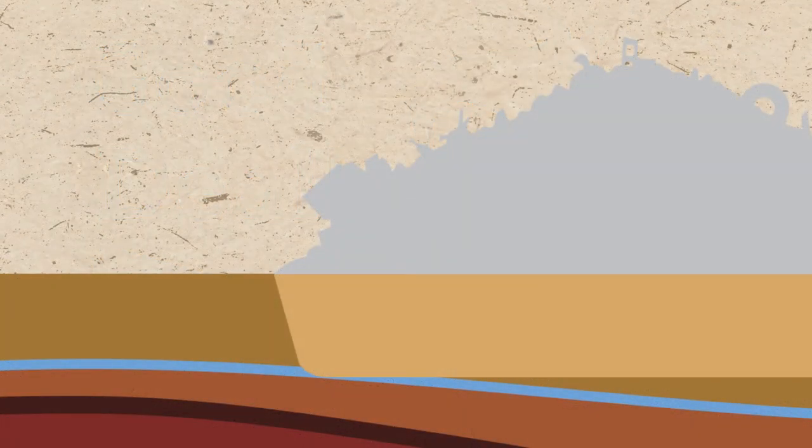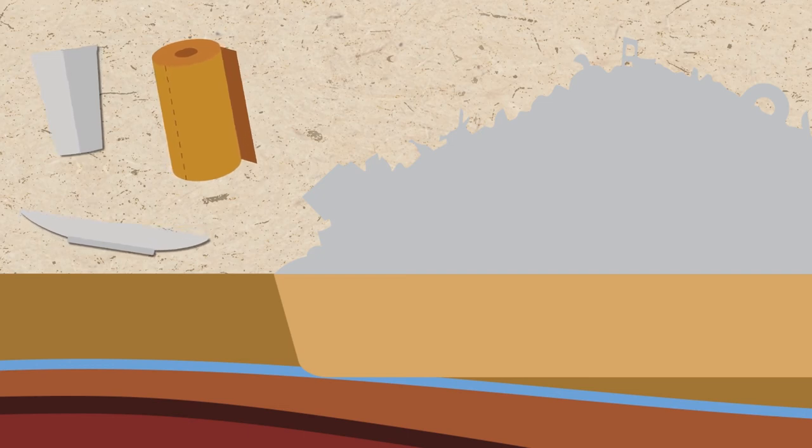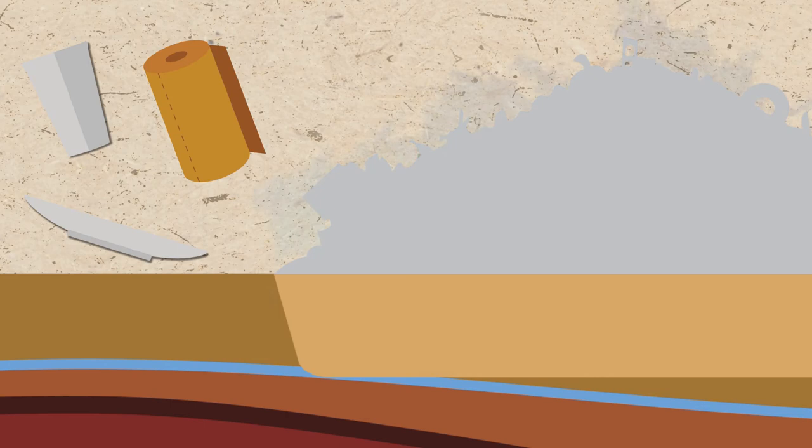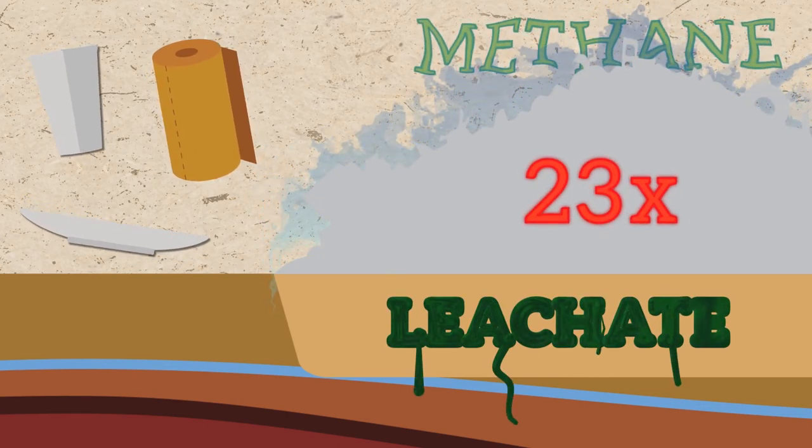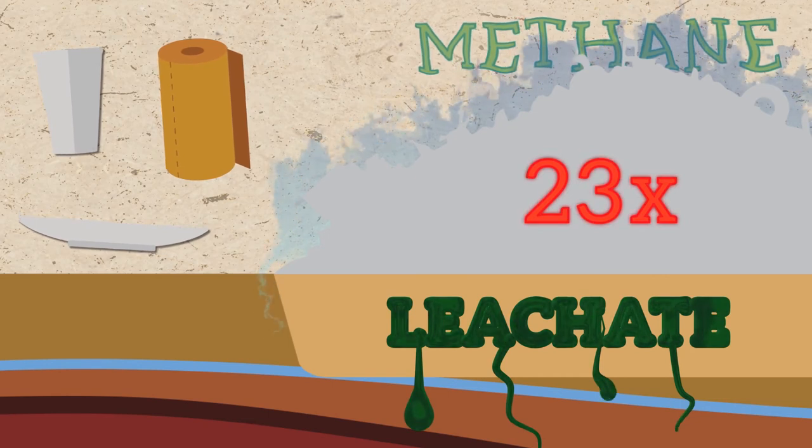What about the environmental impact? Let me explain. When paper towel and break room waste goes to landfill, it decomposes anaerobically into methane gas and leachate. Methane is considered 23 times more potent GHG, greenhouse gas, than CO2.